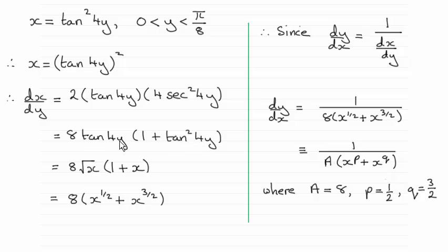Now we know that tan 4y is going to be the root of x, so I can put that as 8 root x times 1 plus x here. And then, knowing that root x is x to the power half, I can multiply that into the bracket here, giving me 8 times all of x to the power half plus x to the power 3 over 2.